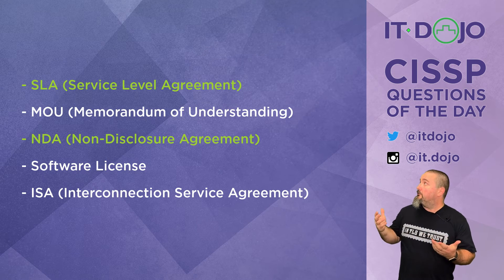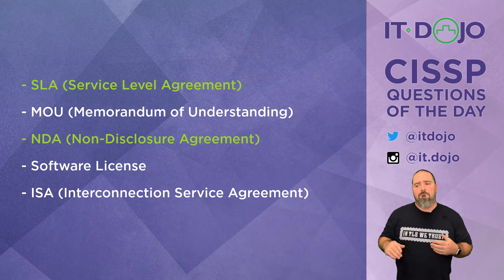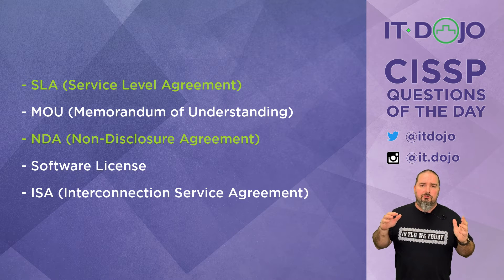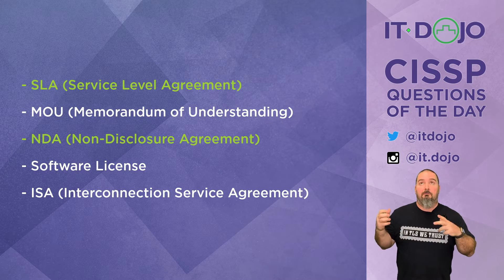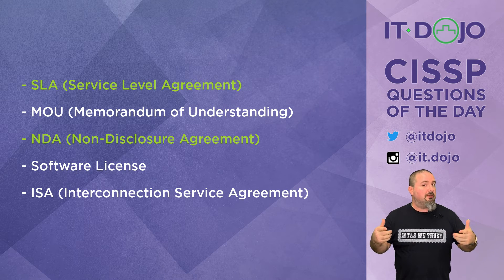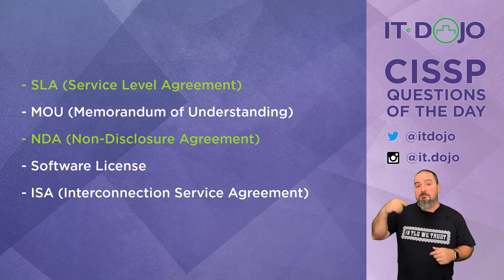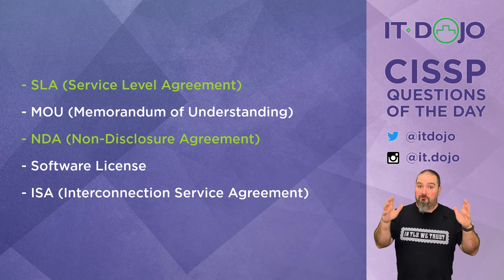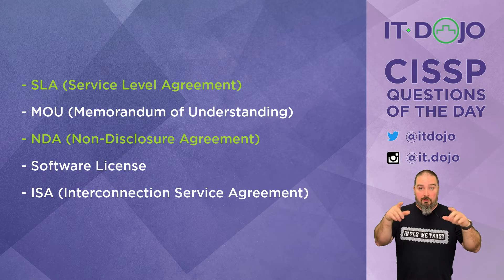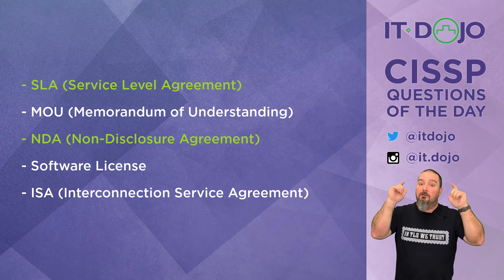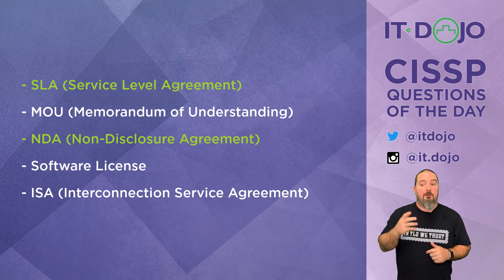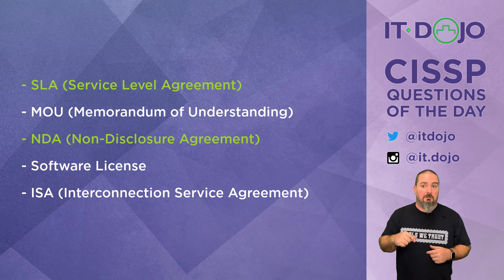The third answer choice — a software license — is not correct here. With software as a service, you're typically not installing software on your computer. You're using a web browser to connect to an interface and using that software through that interface. The software is on their servers on their side, provided to you as a service, so you generally don't need a license for it.